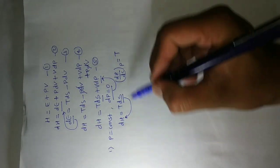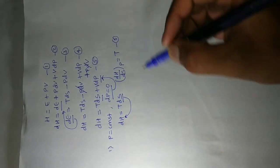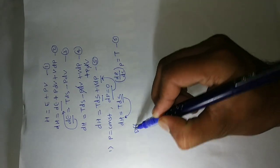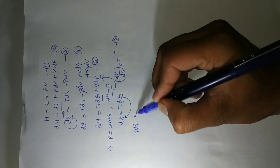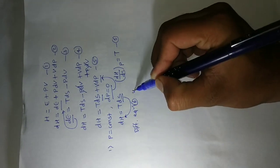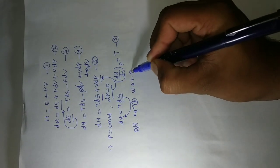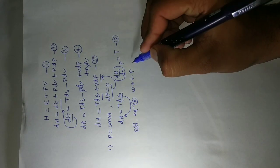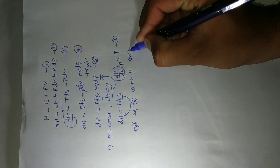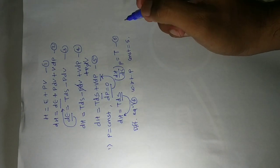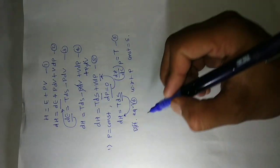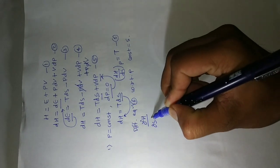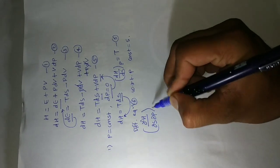Now we can differentiate equation six with respect to pressure at constant entropy. We will get the double differentiation of H with respect to entropy and then pressure, at constant entropy. This is equation number seven.